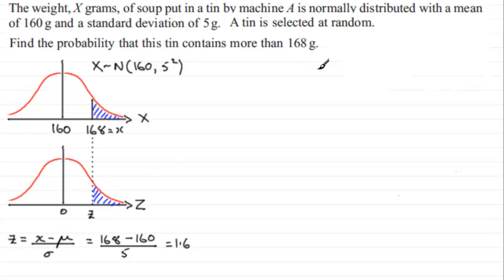So we're down then to work out the probability, let's just draw a line down here. We're down to work out the probability then that X is greater than 168. And this is going to be equivalent to working out the probability that z is greater than 1.6. So let's just put that in, that z is greater than 1.6.